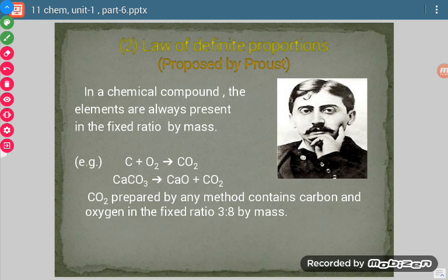When we will check this carbon dioxide, whether it is obtained by one method or by other method, when ratio of the masses of carbon and oxygen will be taken, it will be 3:8 only. So it will be fixed ratio.